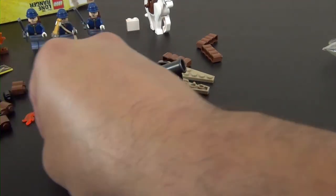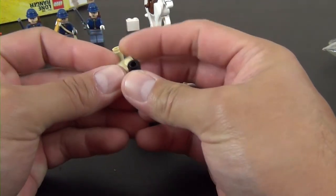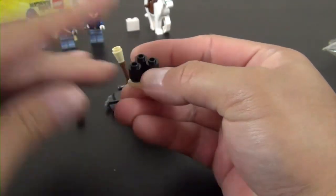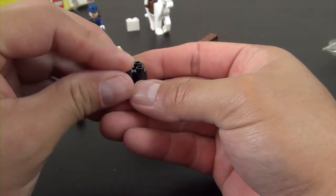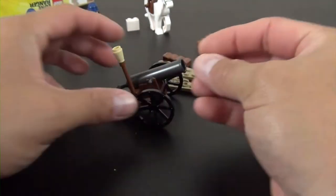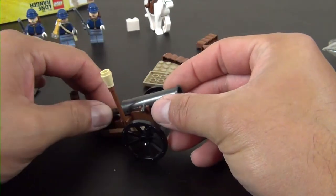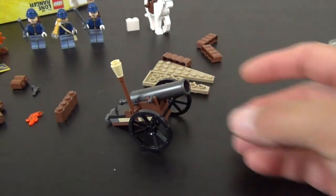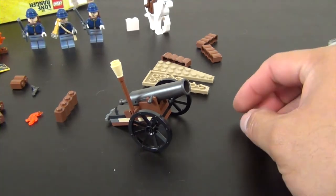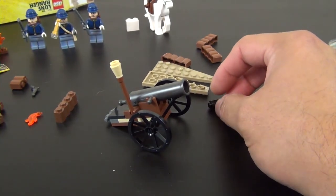These one by one round bricks are the ammunition, and they give us another one. See it goes in there, and when you pull it back and release it, it shoots out. Don't shoot your eye out, kids.